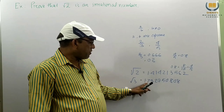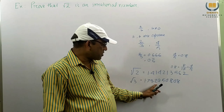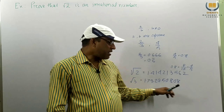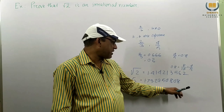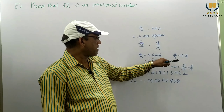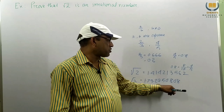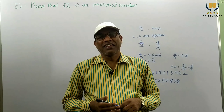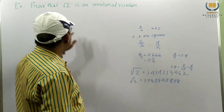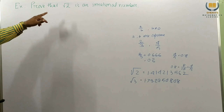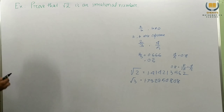Root 3 is 1.73205020 — again you get different digits, all numbers are distinct, no number is repeated. Unlike 0.666 where we can stop and give a bar, this is not possible for root 3. So these are irrational numbers. Practically we know these are irrational, but now we want to theoretically prove that root 2 is an irrational number.